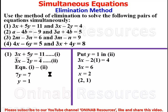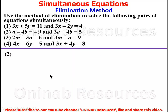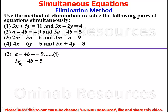So in coordinate form the solution is (2, 1) — that's x comma y in alphabetical order. We are done with problem 1. We go to problem 2: a minus 4b is equal to negative 9 as equation 1, and 3a plus 4b is equal to 5 as equation 2.